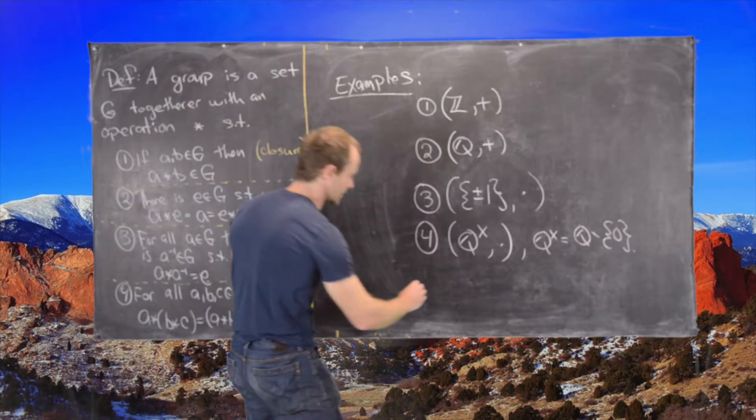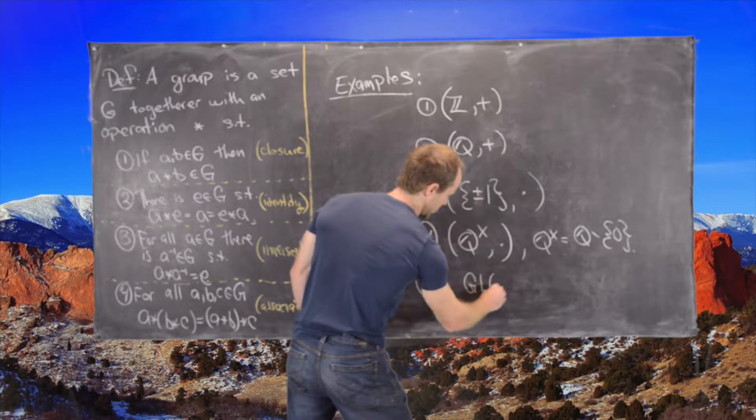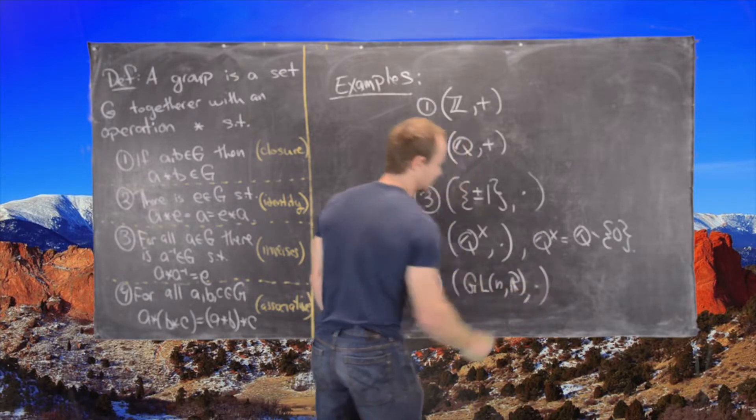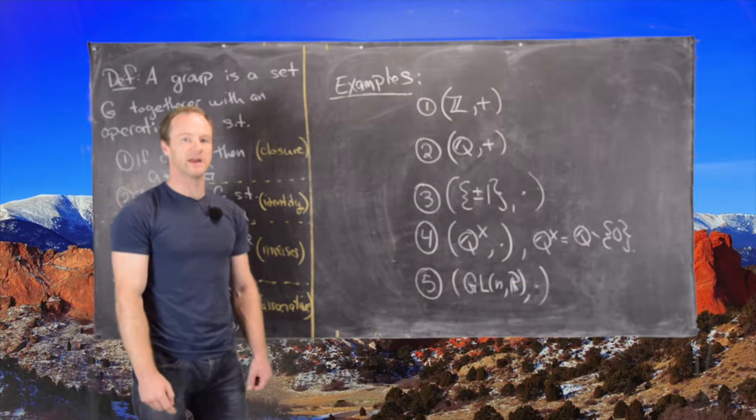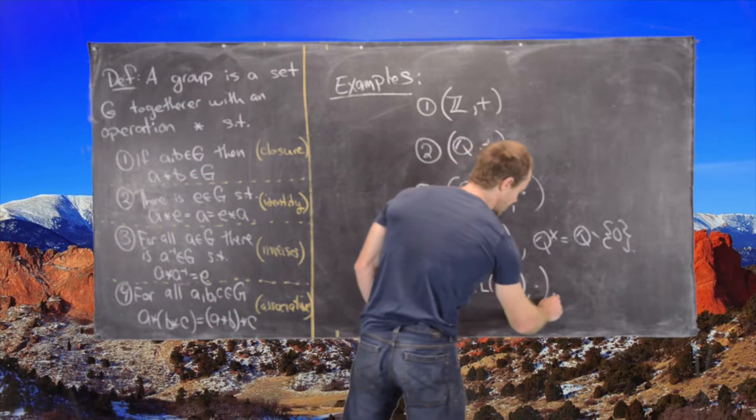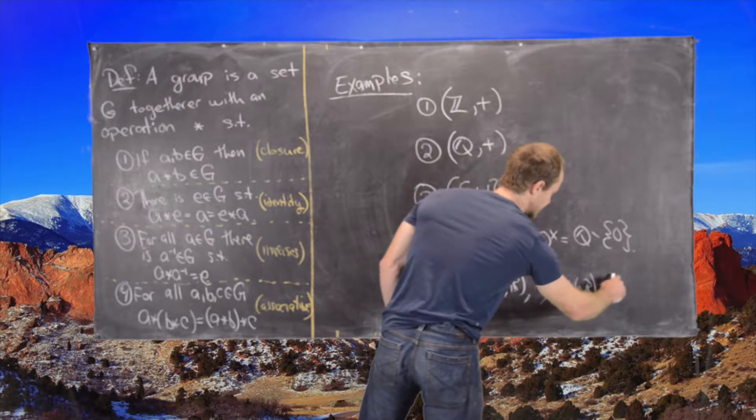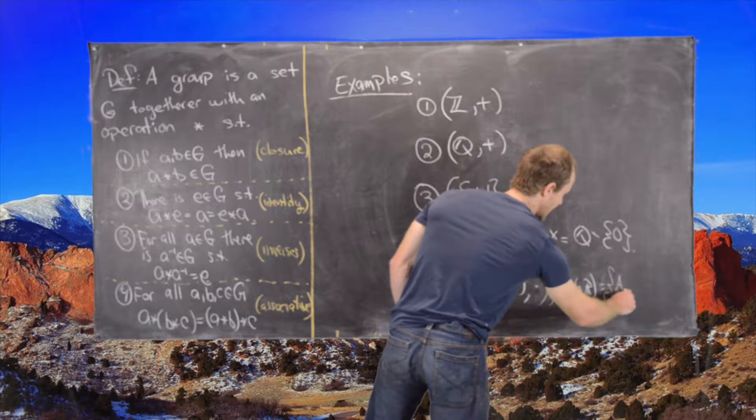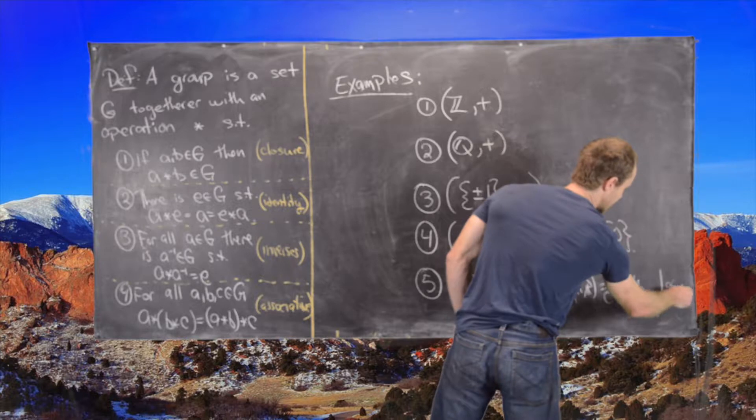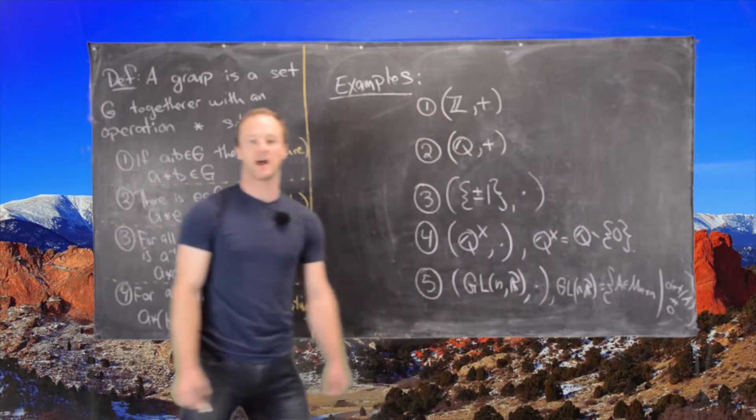Great, so now maybe one more example. GL(n,R) with matrix multiplication. In other words, all n by n matrices with non-zero determinant. So let's just point that out: GL(n,R) will be equal to all A, and these are n by n where the determinant of A is not equal to zero. So that in fact forms a group.